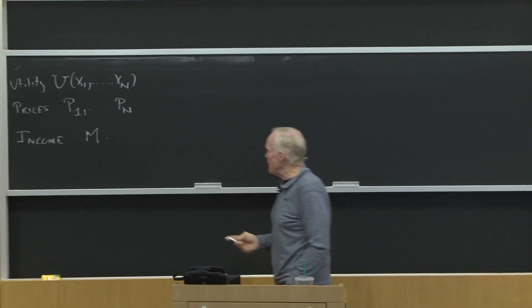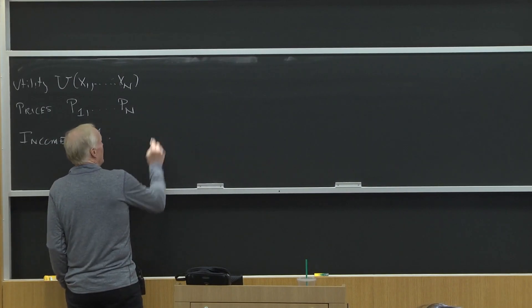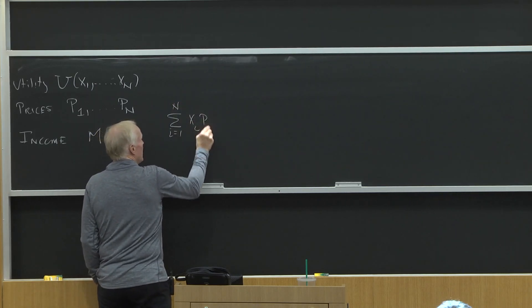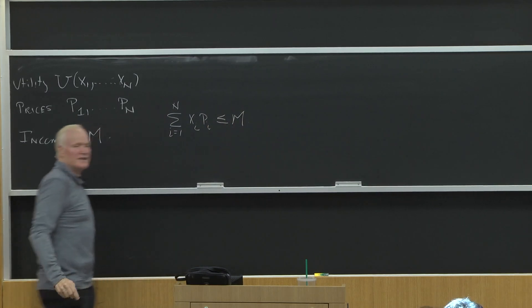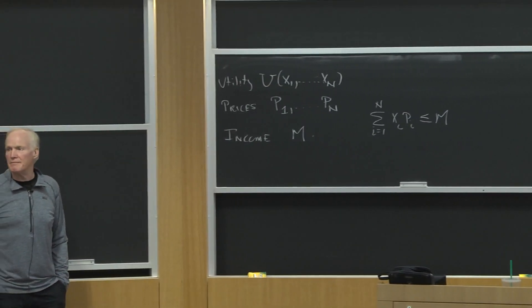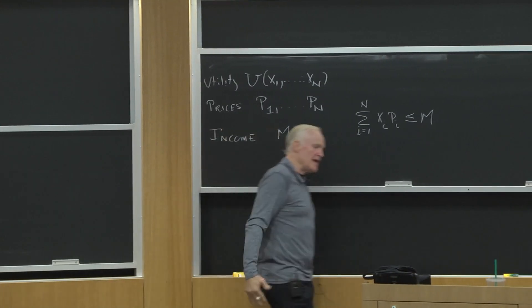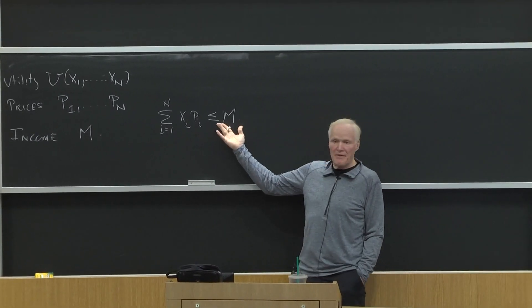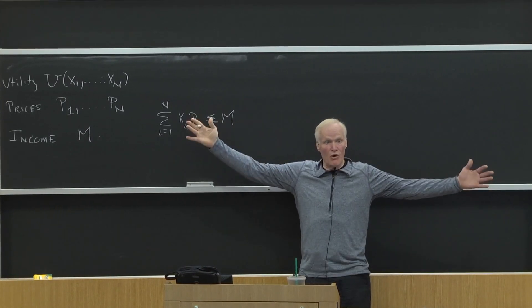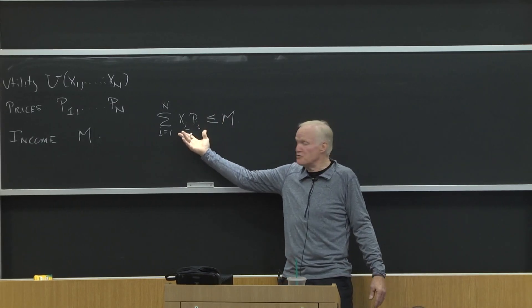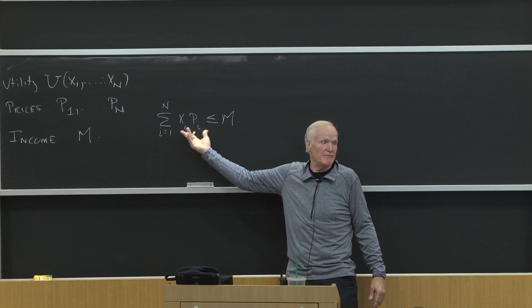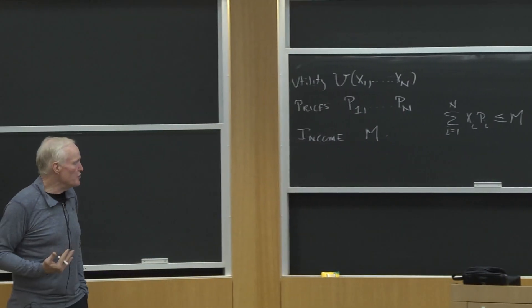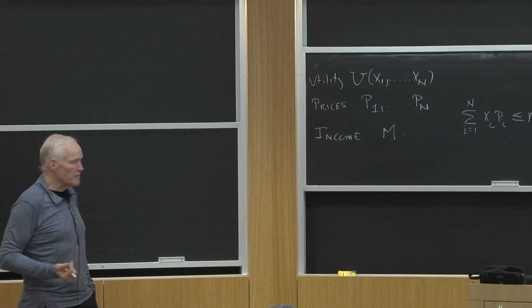Now we usually think about this consumer as having a budget constraint. The budget constraint is the sum from i equals 1 to n of Xi Pi less than or equal to your income. That is, you can't spend any more than your income. Now, that doesn't mean you can't borrow and lend. If you're interested in consumption in multiple periods of time, it just means you have to think about this income as encompassing income over some longer period of time. Borrowing and lending and future consumption would be one of these goods that you're buying. But the basic idea is that you're limited in your choices by some kind of budget constraint.